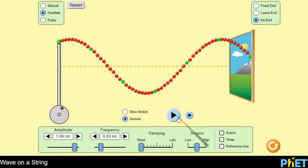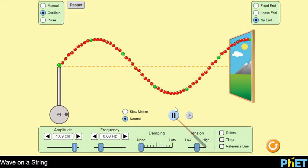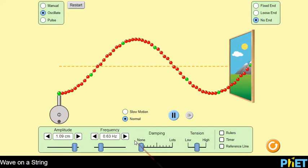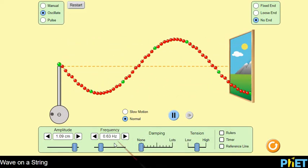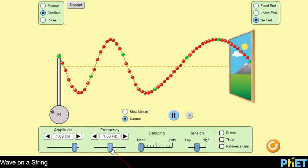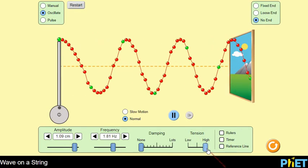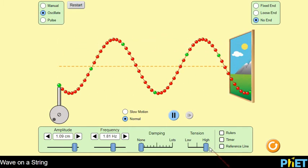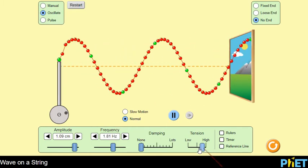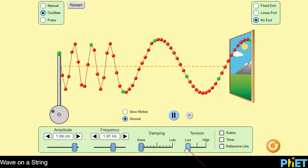But now you should also be remembering that there was another factor that made kind of the same difference, and that was tension. Tension did sort of the same thing. So if I would set my frequency sort of somewhere in the middle now, and now I start adjusting my tension, a very high tension increases my wavelength, and a very low tension decreases my wavelength.